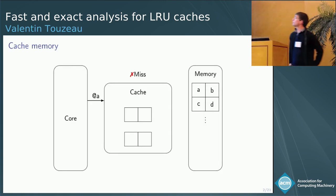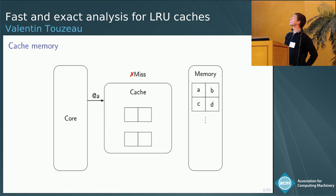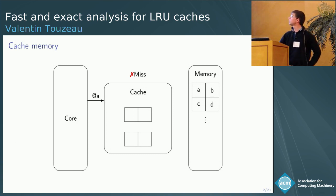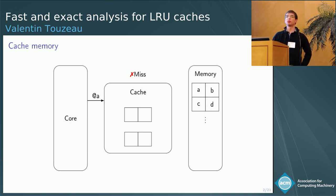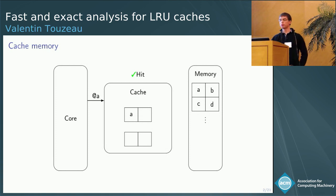A cache is a small but fast memory located between the core where computation occurs and the main memory, which aims at speeding up information retrieval. The first time you access a block, like A in this example, it won't be in the cache — this is called a cache miss. You retrieve it from main memory and load a copy into the cache, so the next time you access it, you retrieve it much faster. This is called a cache hit.